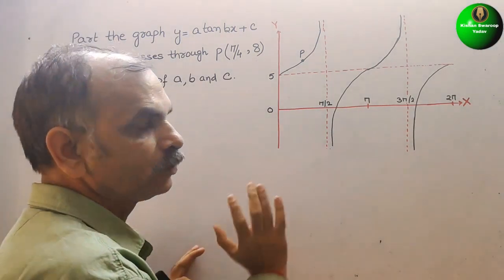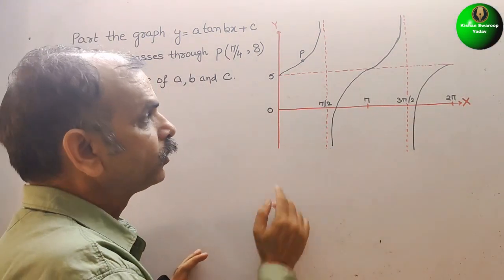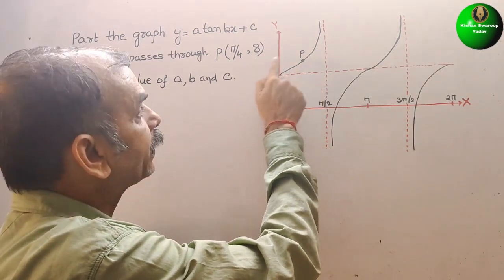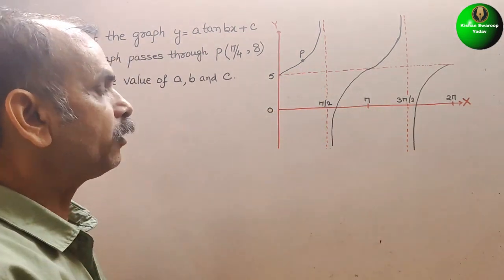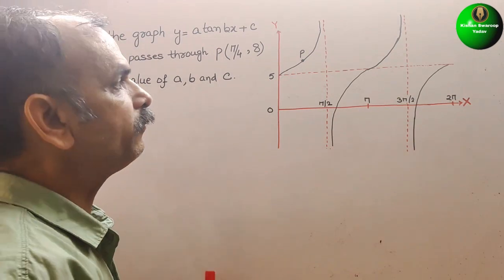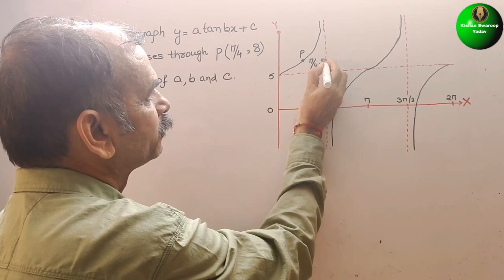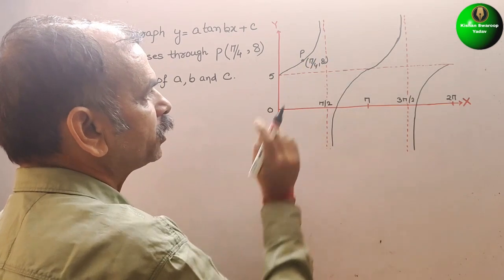So this is your graph, you can see. Now, here they have given the P point and its coordinate is pi by 4 comma 8. That only we will write here, pi by 4 comma 8. This point.